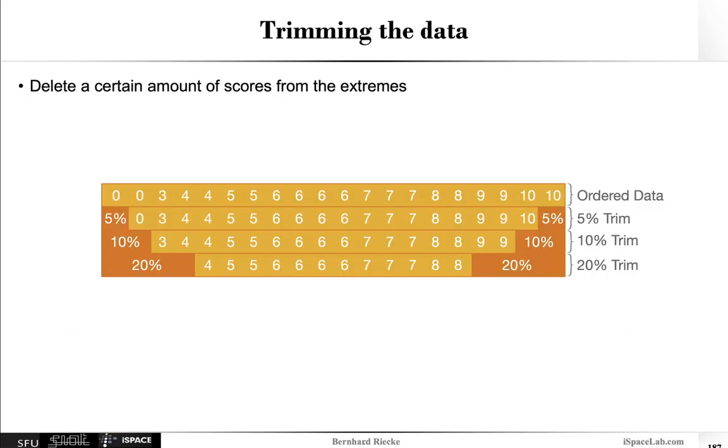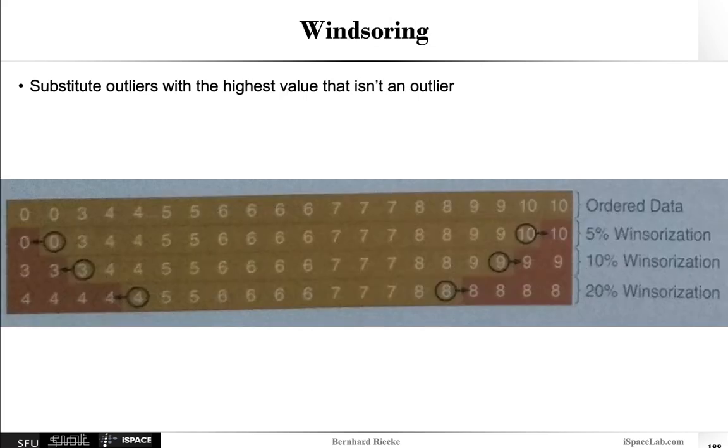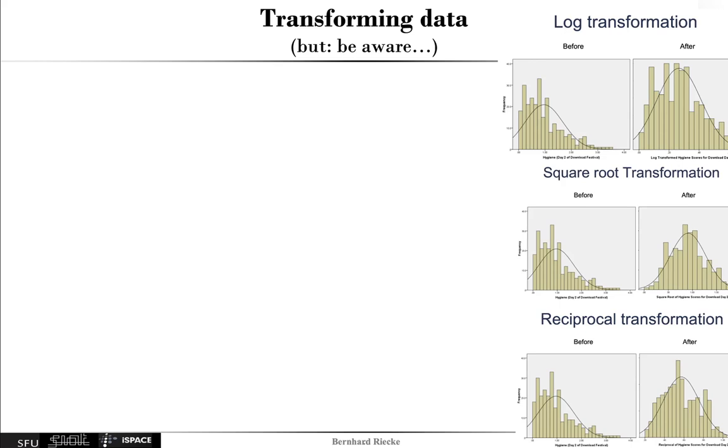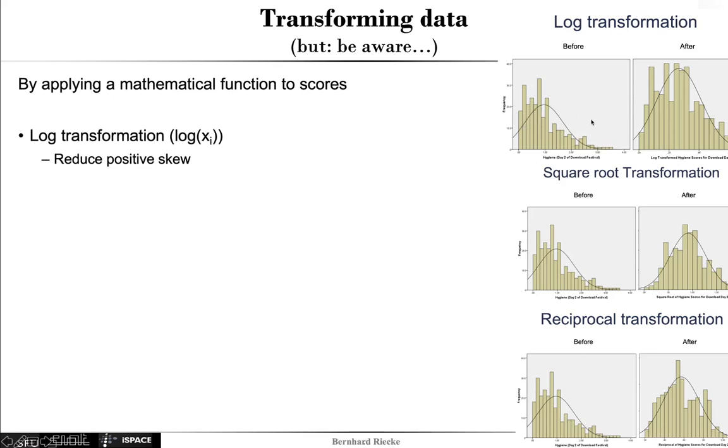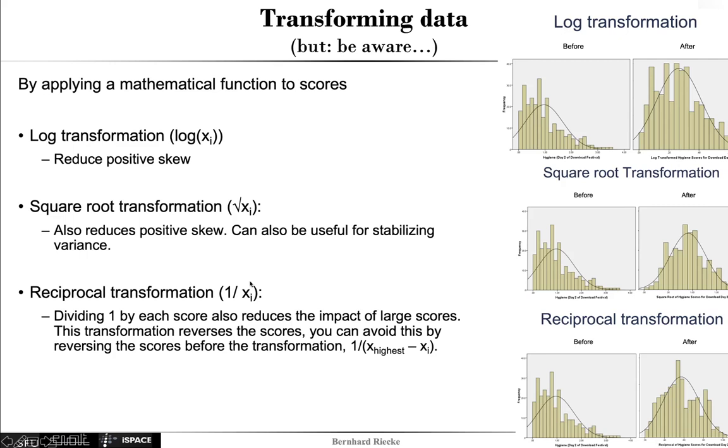So another thing you can do apart from trimming the data, so throwing away the outliers or replacing them in winsorizing, is also transforming the original data. But be aware of that. It can be quite tricky. But let's go a bit into this. So basically to transform the data you apply some kind of mathematical function to the scores that makes the distribution look more normal. So for example for log transformation you basically can use this to reduce positive skew. So if before the transformation it looks like that then afterwards it looks a bit more normal. Another one you can use also to reduce positive skew is square root transformations. So square root of x which can also be useful for stabilizing variances. So it looks quite nice and normal after that. Or you could use a reciprocal transformation. So basically one over x that can also reduce the impact of larger scores. And again this looks a lot more normal here.